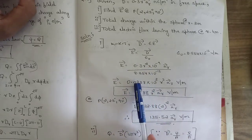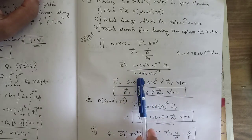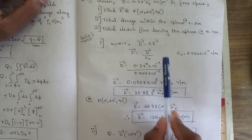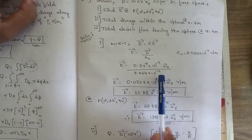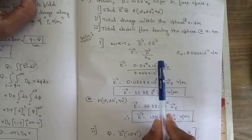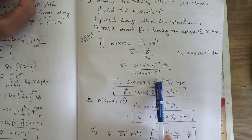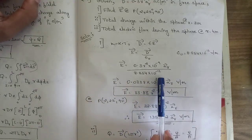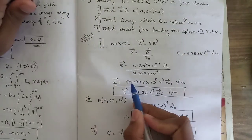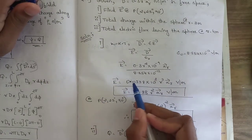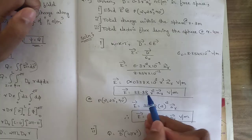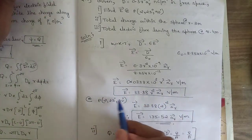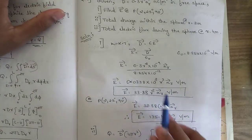Substituting and simplifying, we get 0.0338. Dividing 0.3 by 8.854 and bringing 10⁻¹² to the numerator gives 10⁺¹², so 10⁻⁹ × 10¹² = 10³. To eliminate 10³ we shift the decimal point three places, giving 33.88r² aᵣ vector volts per meter. This is the value of E.